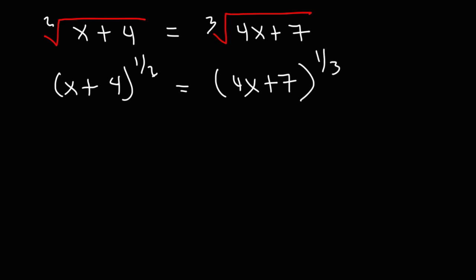Now, in order to make this problem easier, we need to get rid of the fractional exponents. What is the least common multiple of 2 and 3? The least common multiple of 2 and 3 is 6. So what we want to do is raise both sides of the equation to the 6th power.